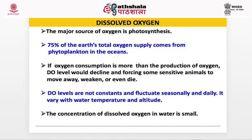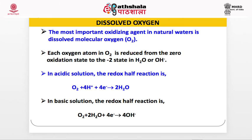The concentration of dissolved oxygen in water is small. The most important oxidizing agent in natural water is dissolved molecular oxygen, O2. Each oxygen atom in O2 is reduced from the 0 oxidation state to the minus 2 state in H2O or OH ion. In acidic solution, the redox half reaction is: O2 + 4H⁺ + 4e⁻ → 2H2O. In basic solution, the redox half reaction is: O2 + 2H2O + 4e⁻ → 4OH⁻.